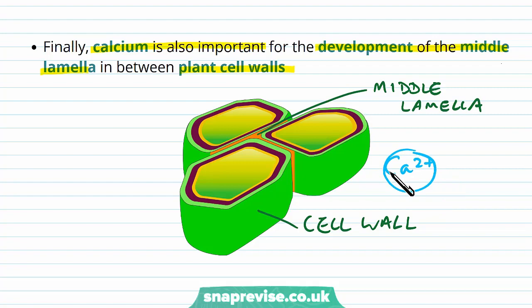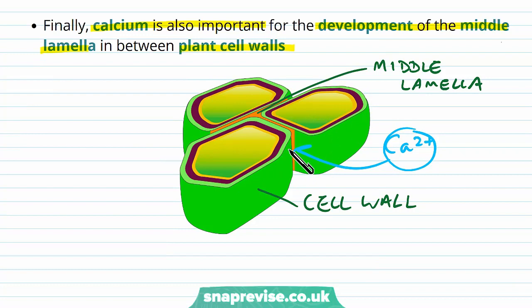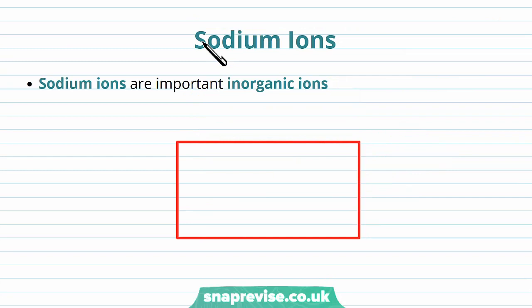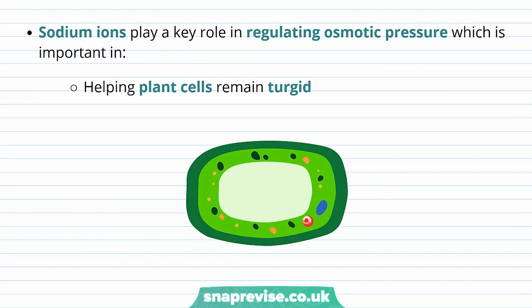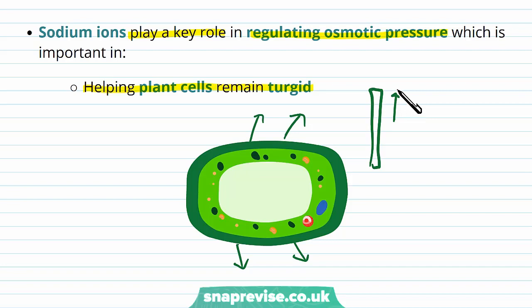As you can see, calcium has many different roles in both animals and plants and is a very important inorganic ion. Sodium ions are also a crucial ion in many organisms. The formula for the sodium ion is Na+ with a one plus charge, making it a cation. Sodium ions play a key role in regulating osmotic pressure, which is important in many types of cells. It helps plant cells remain turgid — when the plant cell is full of sodium, it lowers the water potential of the cell enough to draw water in from outside, causing the cell to swell and become turgid.